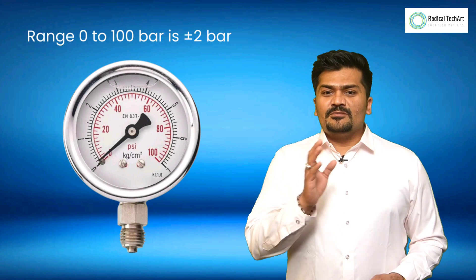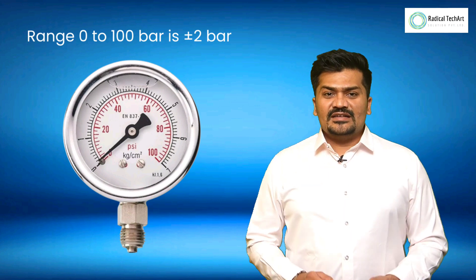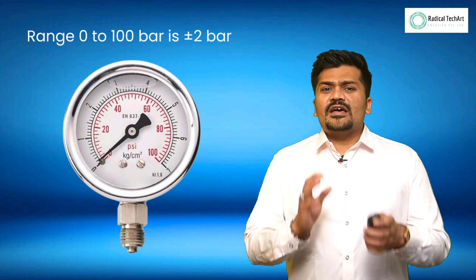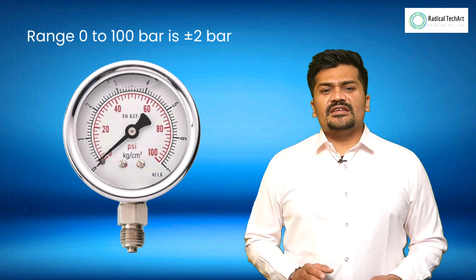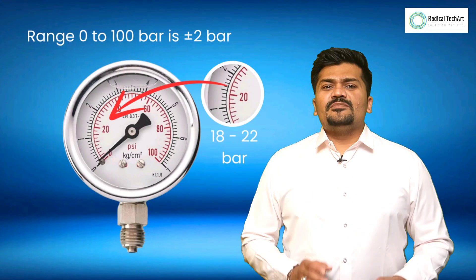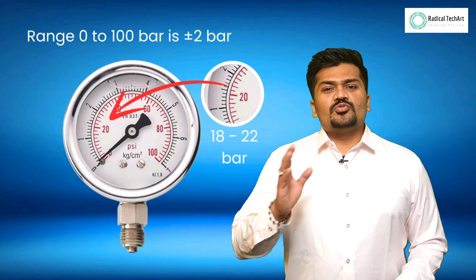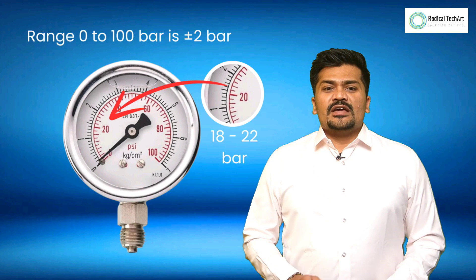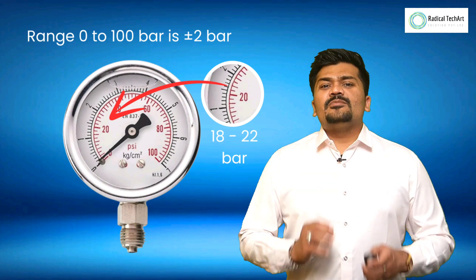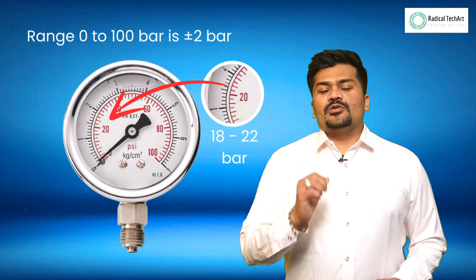For example, if we are measuring a reading of 20 bar, then the actual value can be anywhere between 18 bar and 22 bar. Any reading within that range is considered an accurate reading.